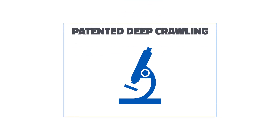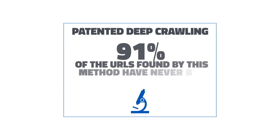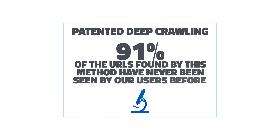In addition, when a malicious URL is found, the patented deep-crawling process of associated URLs is triggered to uncover additional threats for enhanced proactive protection. 91% of URLs found by this method have never been seen by our users before, but they will now be proactively protected from these newly discovered threats.